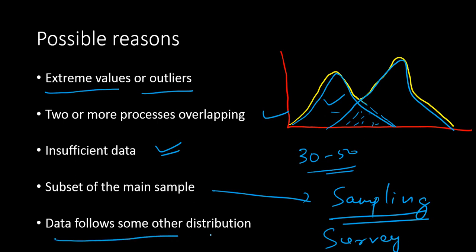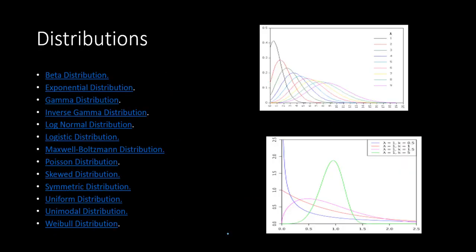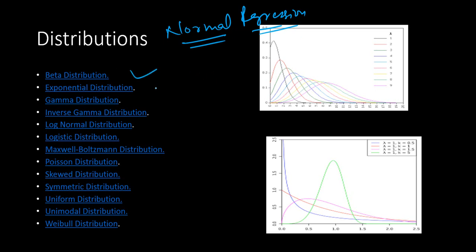Your data could also follow some other distribution. There is no reason why every dataset would follow a normal distribution. Although normality is very popular, other distributions also occur in the real world. There is no reason to apply a linear regression with a normality assumption in those cases — you should use a different type of regression based on the distribution your data follows. It could be beta, exponential, gamma, inverse gamma, log-normal, logistic, Maxwell-Boltzmann, Poisson, skewed, symmetric, uniform, and many more.